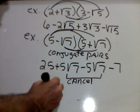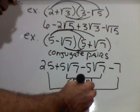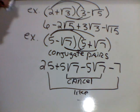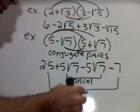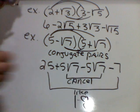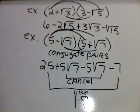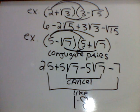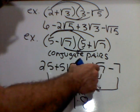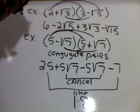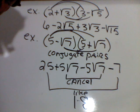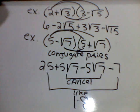Now, my other like terms are my numbers. 25 minus 7 gives me 18. Now, that's the thing I want you to realize about the conjugate pairs. The middle terms always cancel. And, in the final answer, there's no radical. And that's what's special about conjugate pairs. You always get rid of that radical.